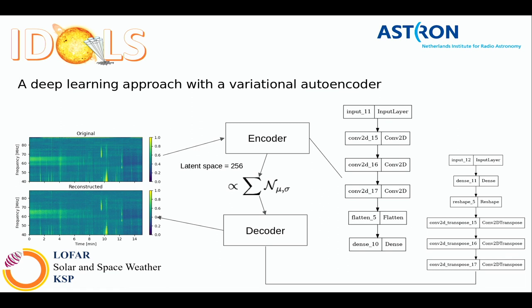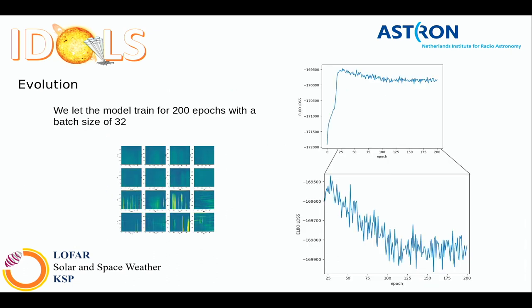We started with a very simple VAE: an input layer going down in resolution, a flattened layer with a latent space distributed as a series of Gaussians with mean mu and sigma — giving us 2×256 parameters — and then a decoder. We trained for 200 epochs with a batch size of 32. The ELBO loss shows an initial transitional phase and then optimizes to a plateau, and the major characteristics of reconstructed images pretty much match the originals.